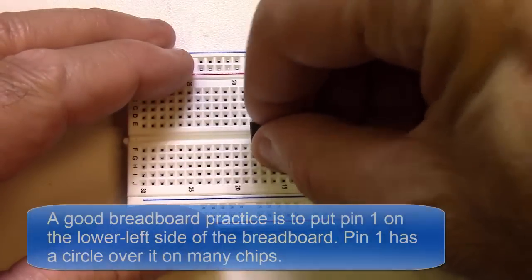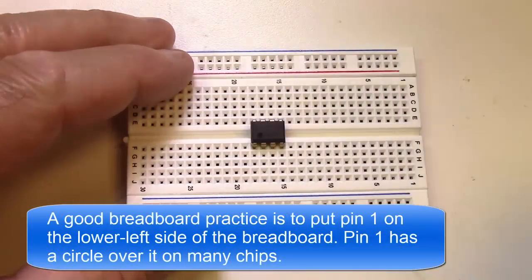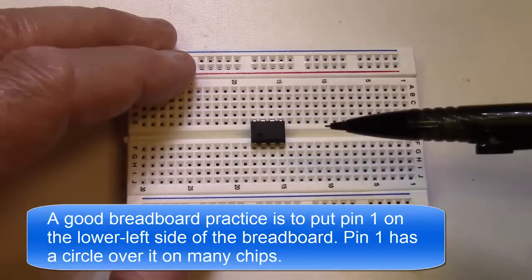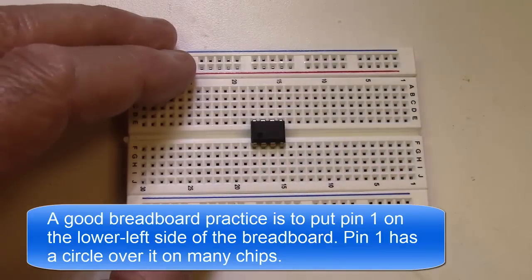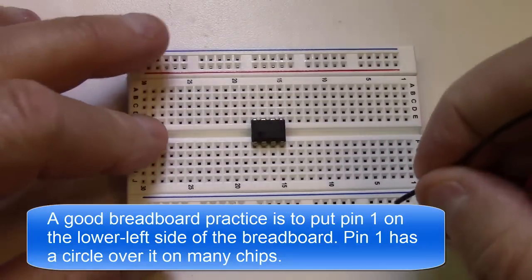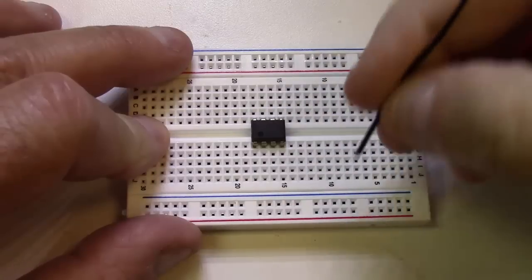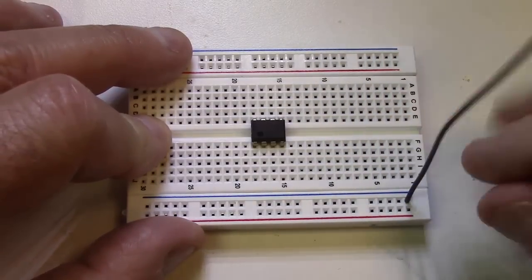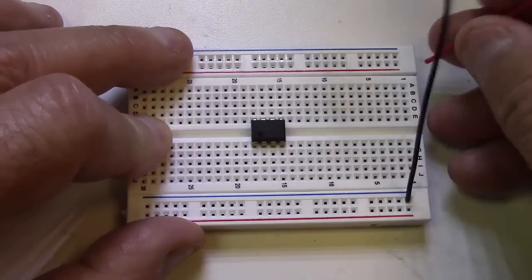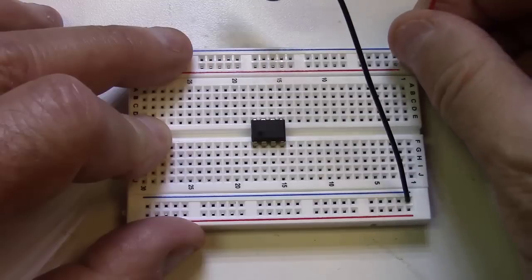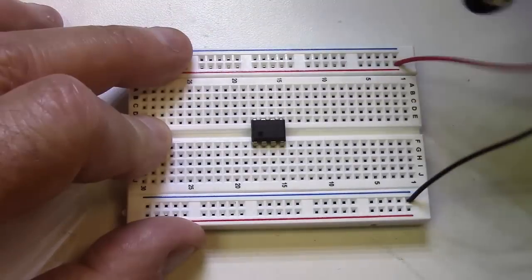I like to put the chips on the breadboard with pin one on the lower left side of the chip. I like to put my power - we're going to use a nine volt battery clip here - and I'm going to hook my ground to the blue bus on the bottom and my V plus to the red power bus on top of the breadboard.